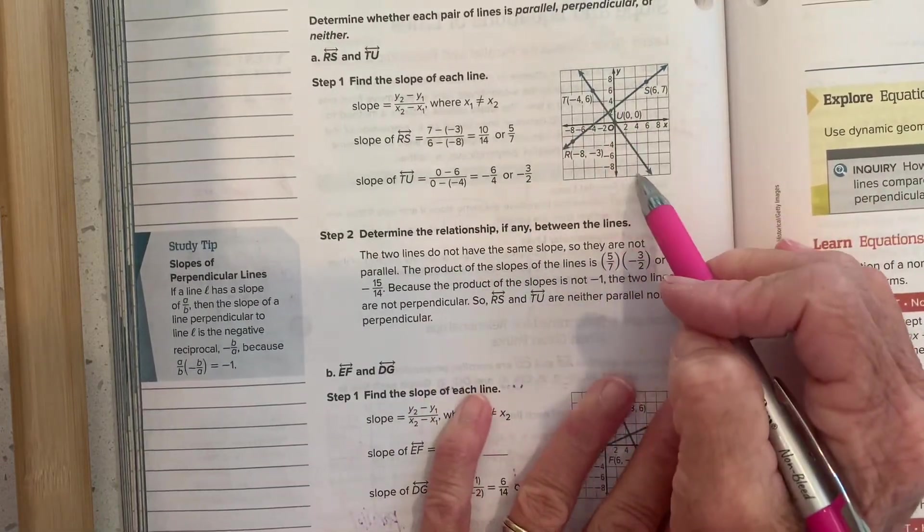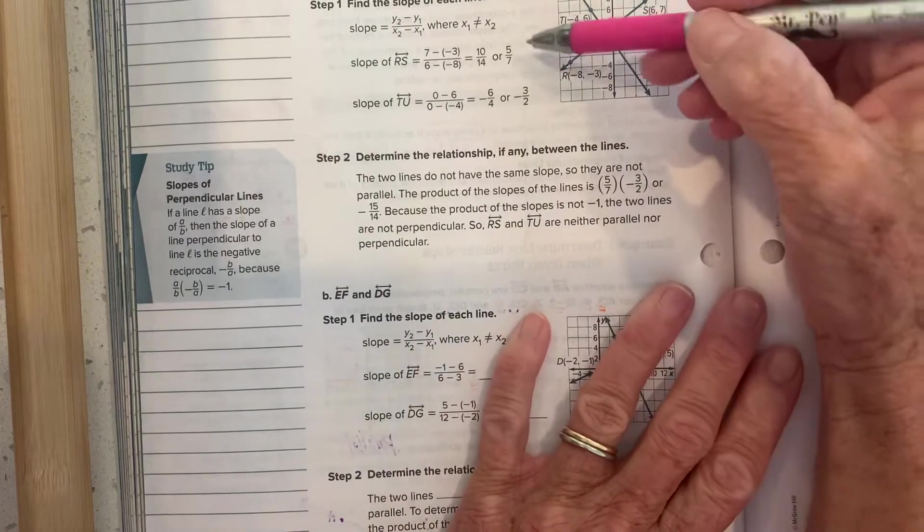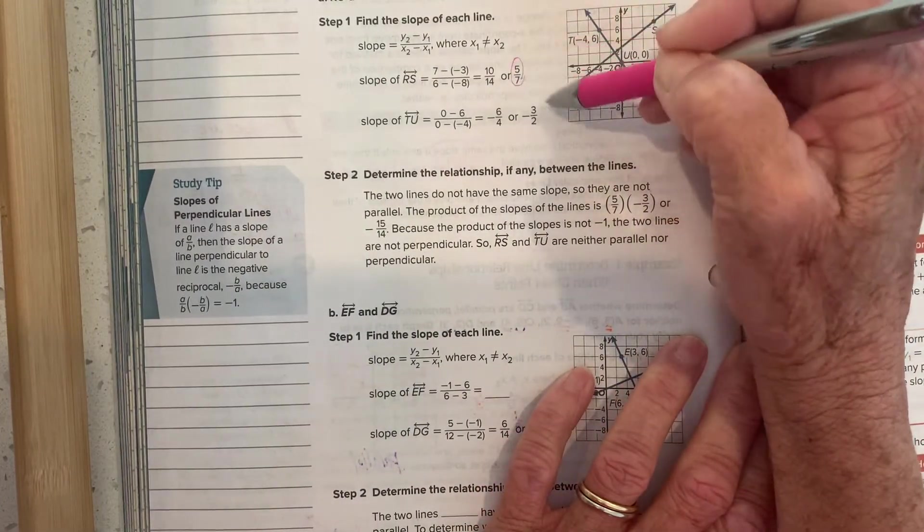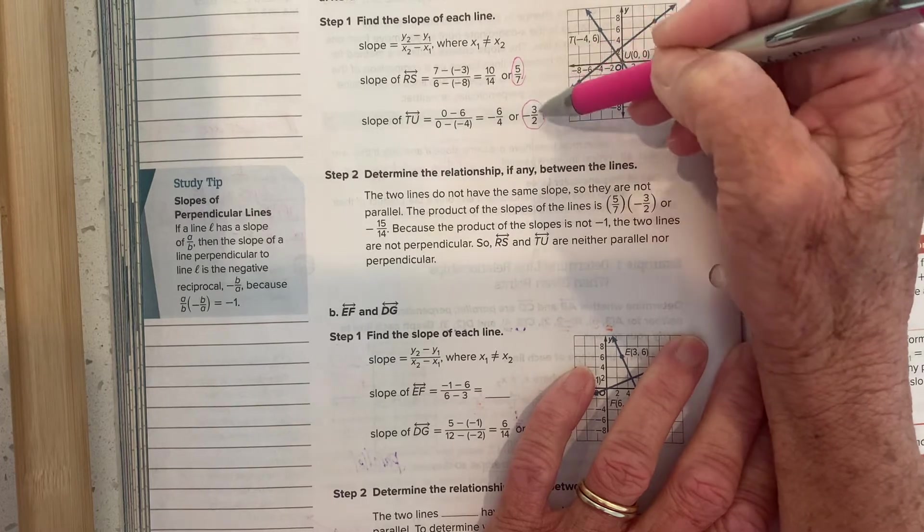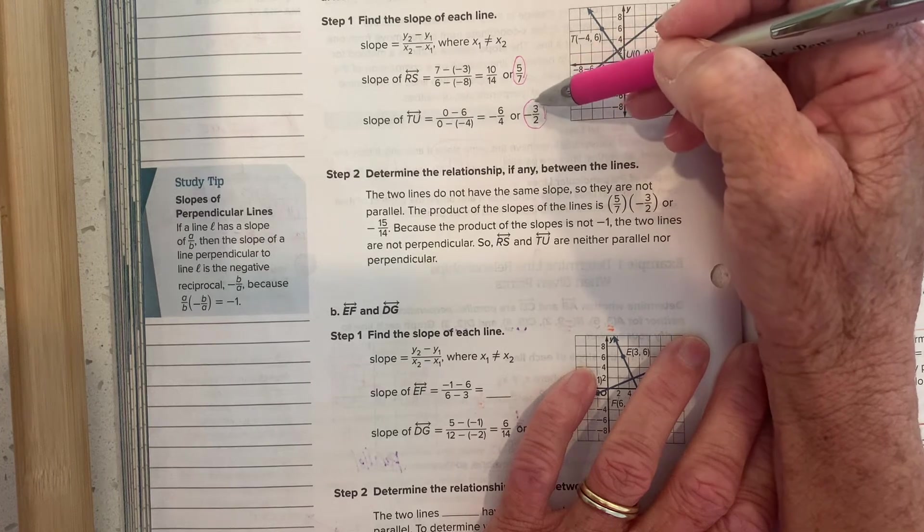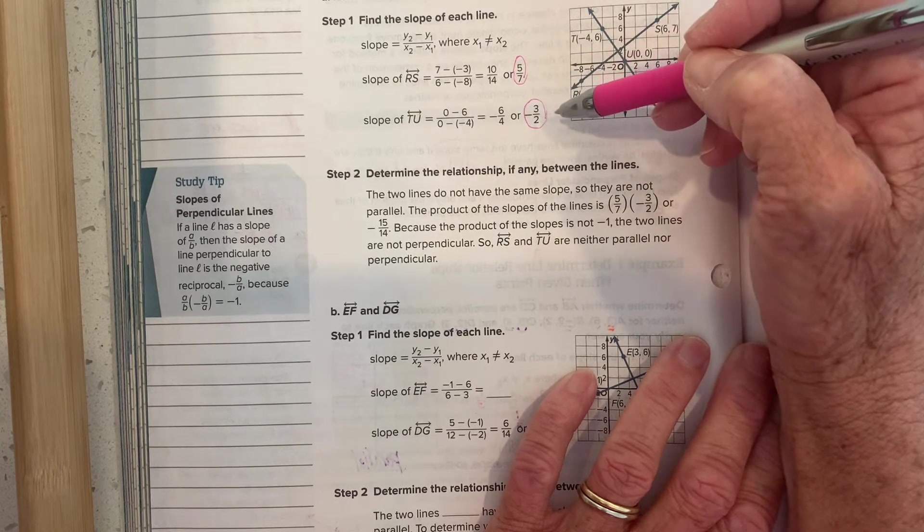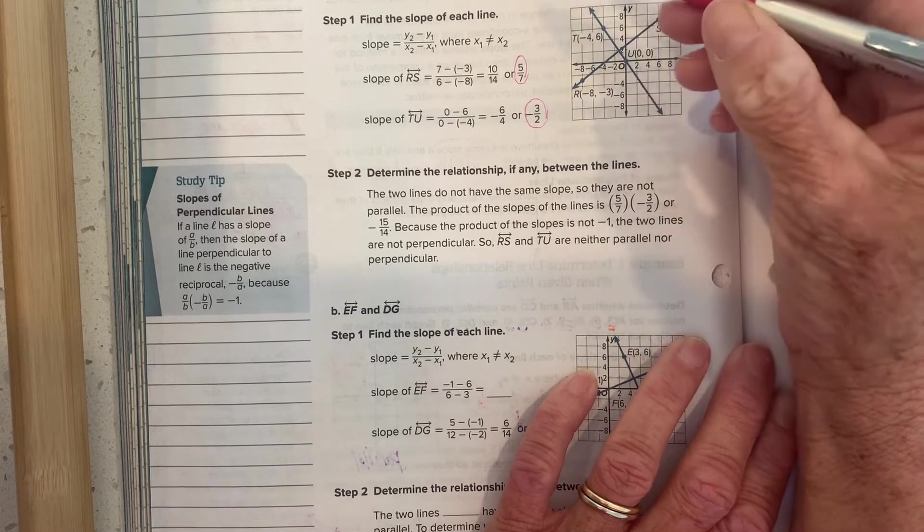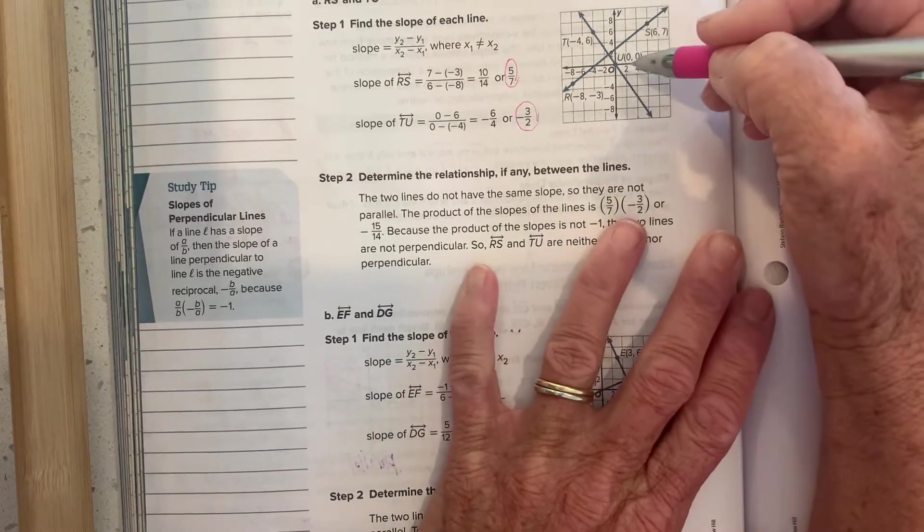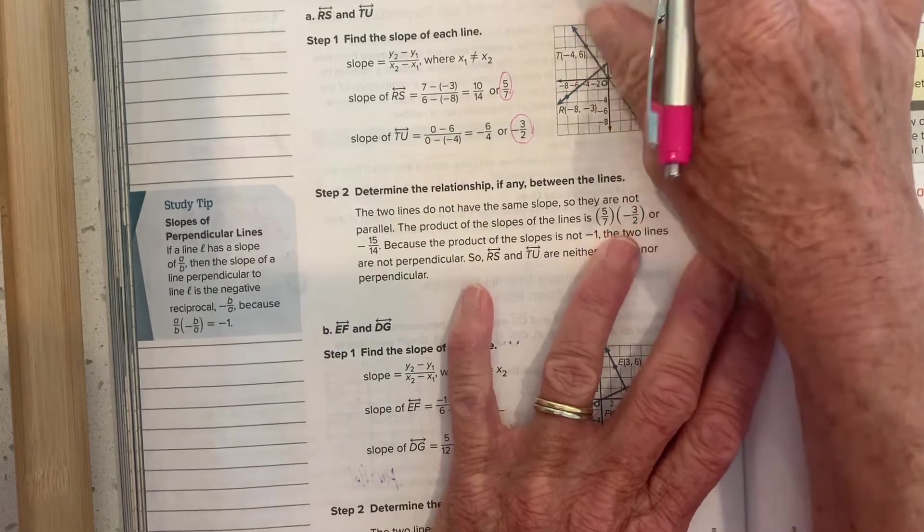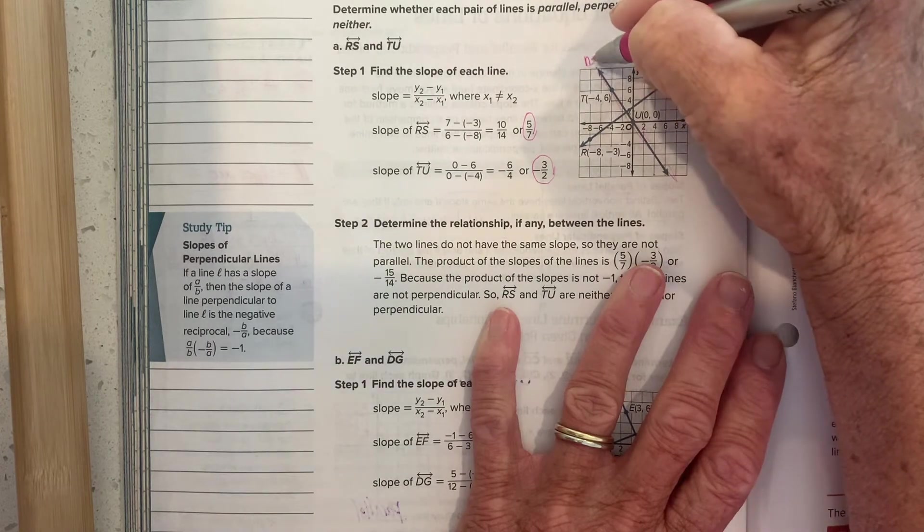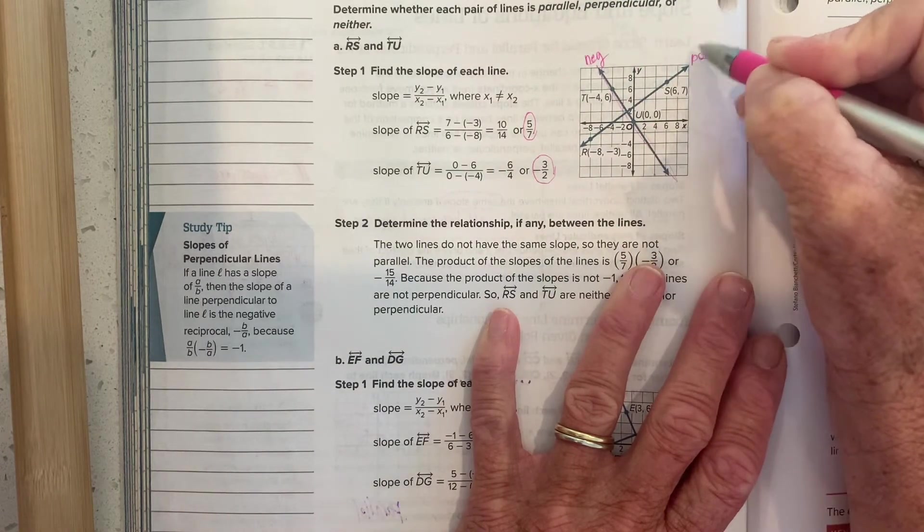Parallel, perpendicular, or neither. So notice that they've done all of the work already, and we could go through it, but we've done that twice now. And I want you to see that those lines don't have the same slopes, nor are those opposite reciprocals. So this one's going to end up being neither, neither parallel nor perpendicular. But I want to remind you of a quick way to do slope. If they give you the graph.